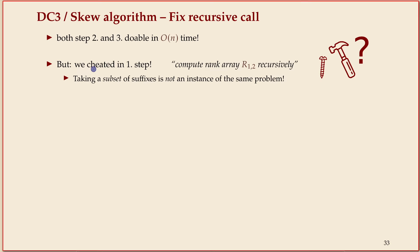I cheated a bit in this first step. I said let's recurse on all the ranks that are not a multiple of three, but I can't just take an arbitrary subset of indices and claim that's again a problem of the same form.